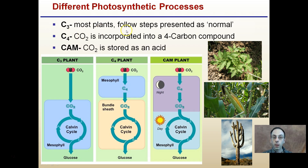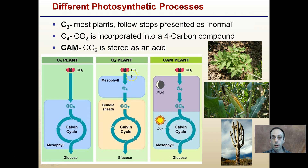C3 is most plants and they follow the normal steps. The Calvin cycle occurs in the mesophyll with CO2 directly and produces glucose. C4 plants incorporate carbon dioxide into a four-carbon compound in the mesophyll, and the Calvin cycle actually occurs in the bundle sheath cells.